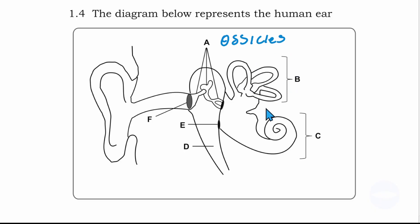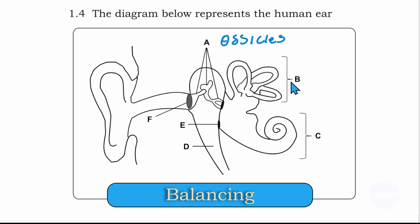Number B are the semi-circular canal. This part is called semi-circular canal and is responsible for balance.